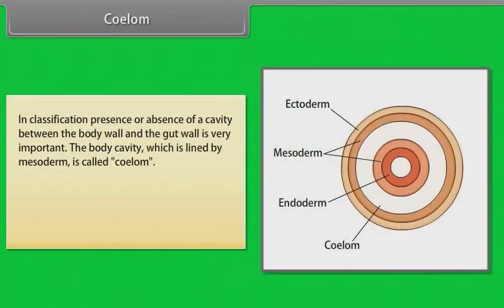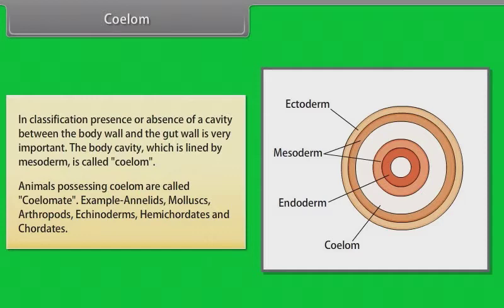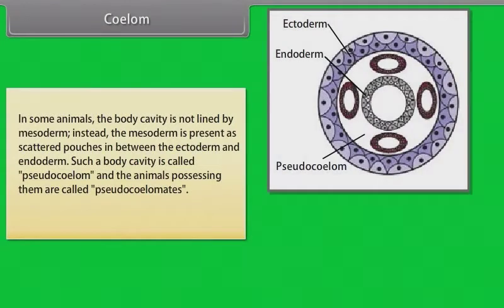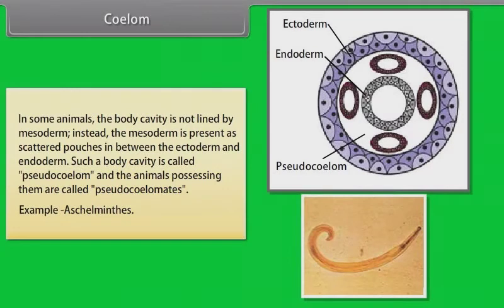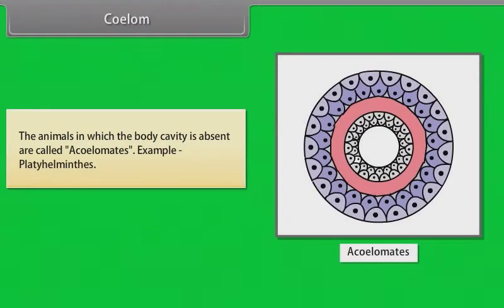In classification, presence or absence of a cavity between the body wall and the gut wall is very important. The body cavity which is lined by mesoderm is called coelom. Animals possessing coelom are called coelomates — example: annelids, molluscs, arthropods, echinoderms, hemichordates and chordates. In some animals, the body cavity is not lined by mesoderm; instead, the mesoderm is present as scattered pouches. Such a cavity is called pseudocoelom, and those animals are called pseudocoelomates — example: Aschelminthes. Animals in which the body cavity is absent are called acoelomates — example: Platyhelminthes.